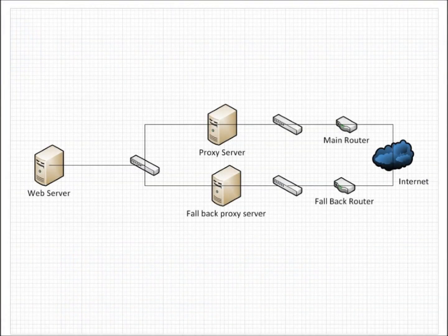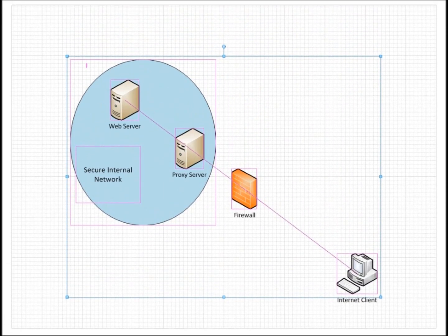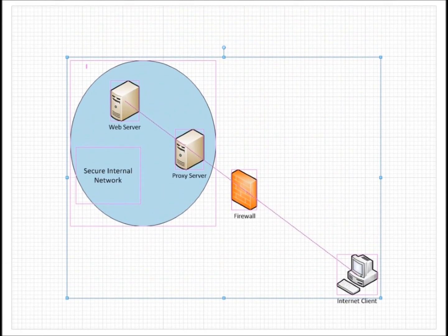To counteract these problems, you could create fallback connections for the proxy in case it does go down, and place a firewall in front of it to increase its protection against incoming attacks.